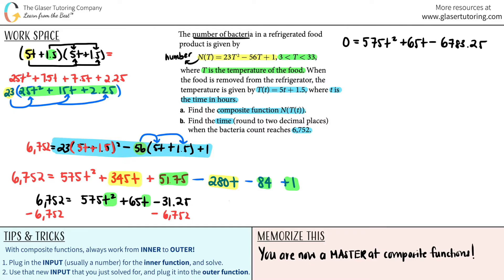Now we're ready for the quadratic formula. You have your A, B, and C values. Remember the quadratic is Ax² + Bx + C. This is the A value, this is the B value, and this is the C value. So A = 575, B = 65, and C = -6783.25.